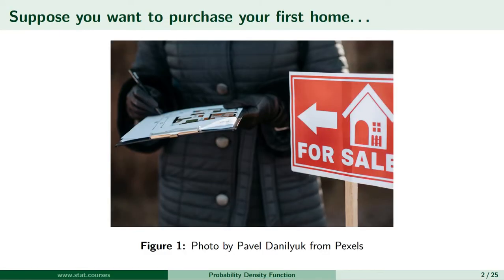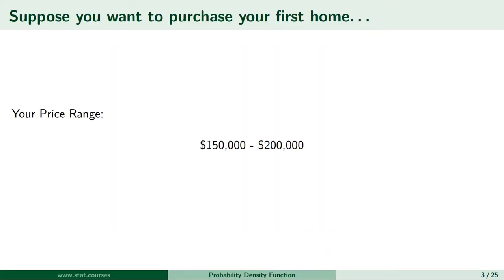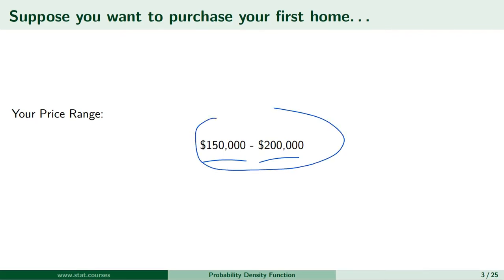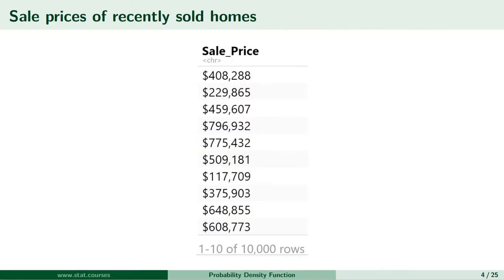Suppose you want to purchase your first residential home. Let's say you have a price range in mind — you are able to afford a home priced between $150,000 and $200,000. Now you wonder how difficult or how easy it is to find a house in that price range. To answer that question, you go get some data which contains sale prices of residential houses in your city, maybe recent sale prices. And in your sample data you have, let's say, 10,000 sale prices.